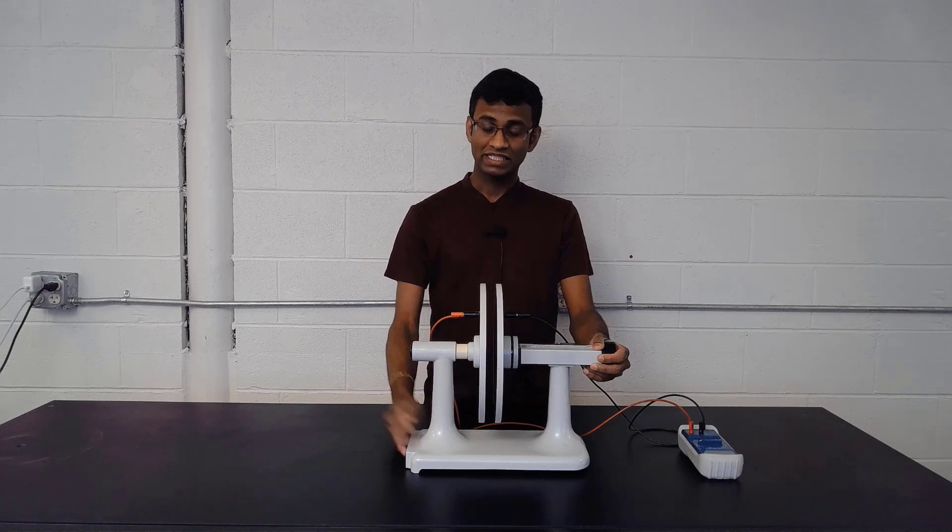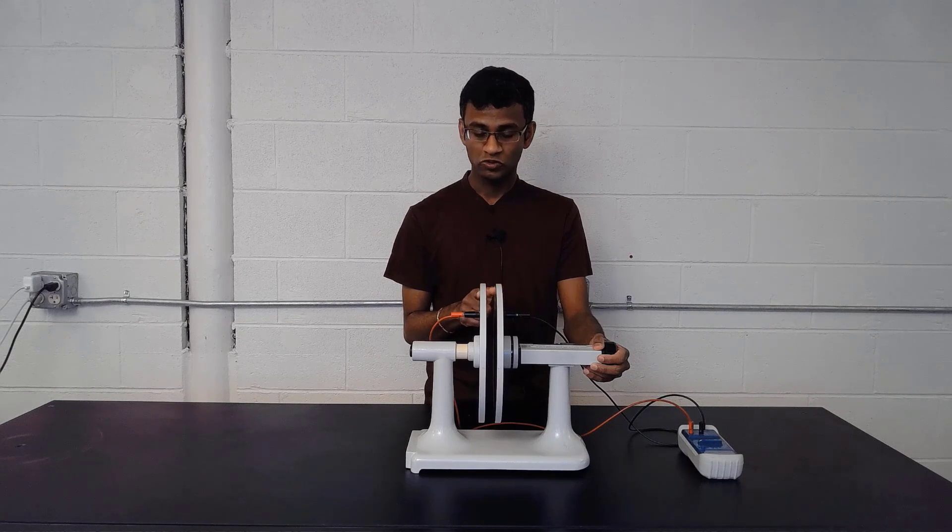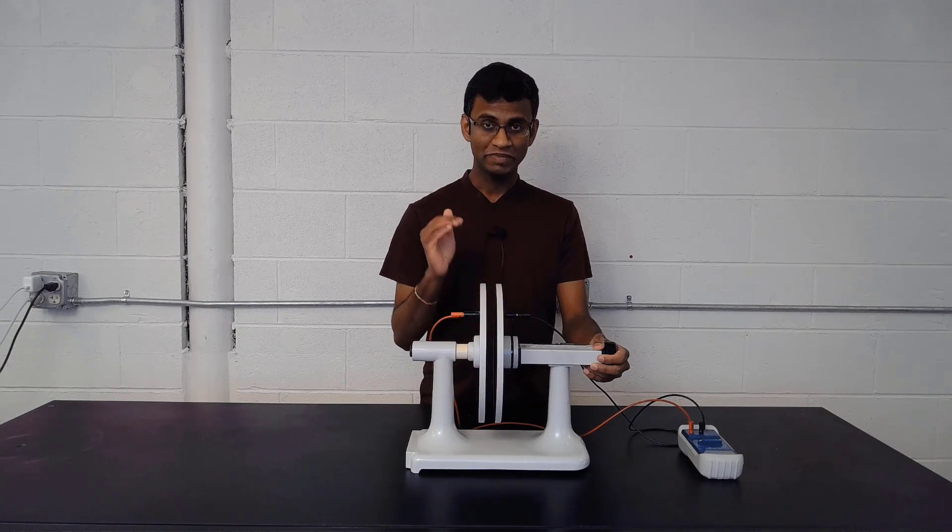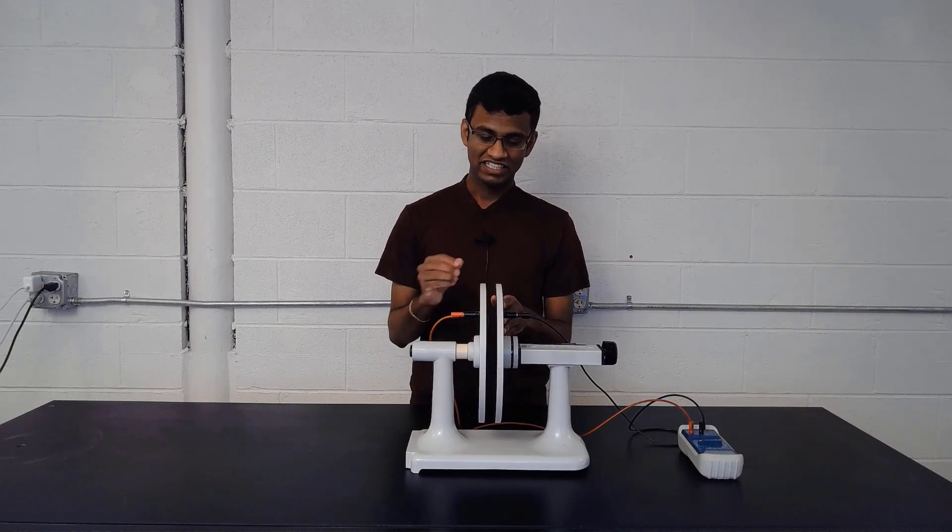Here we have the parallel plate capacitor. Parallel plate capacitor consists of two parallel plates, and there is a small separation between those two plates. The non-conducting medium in between these two plates is air. A capacitor is characterized by the capacitance, which we measure in farads.